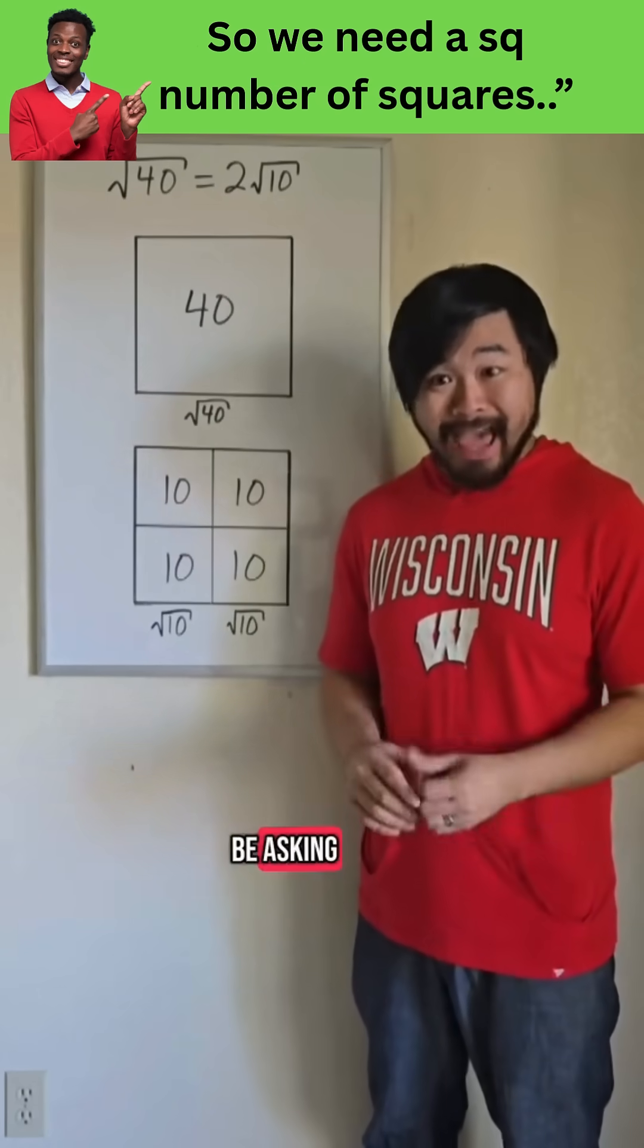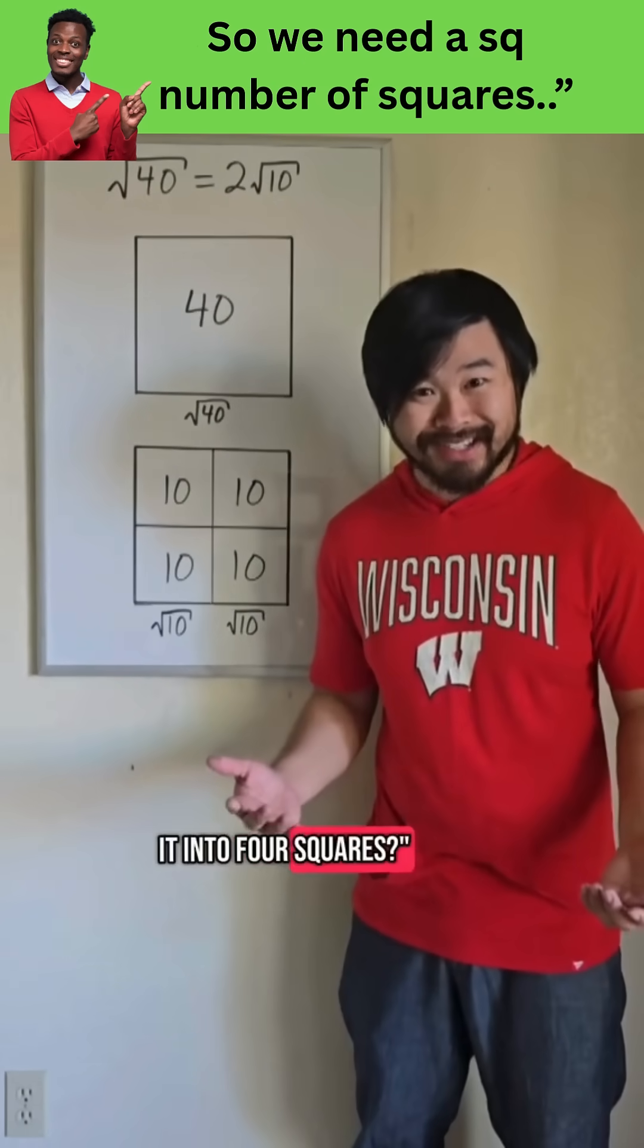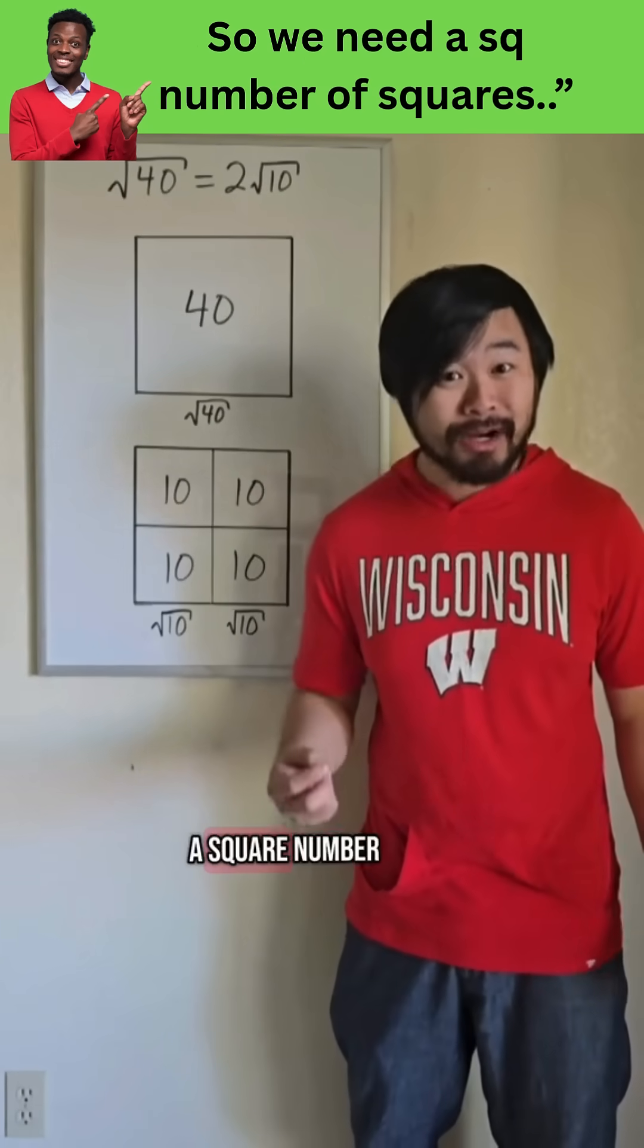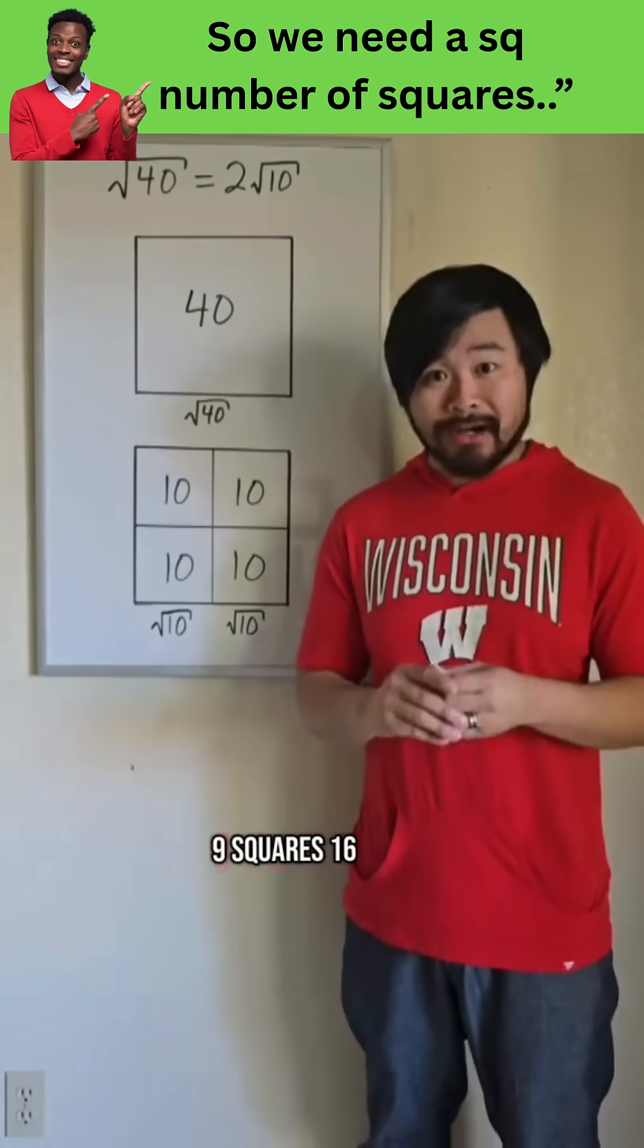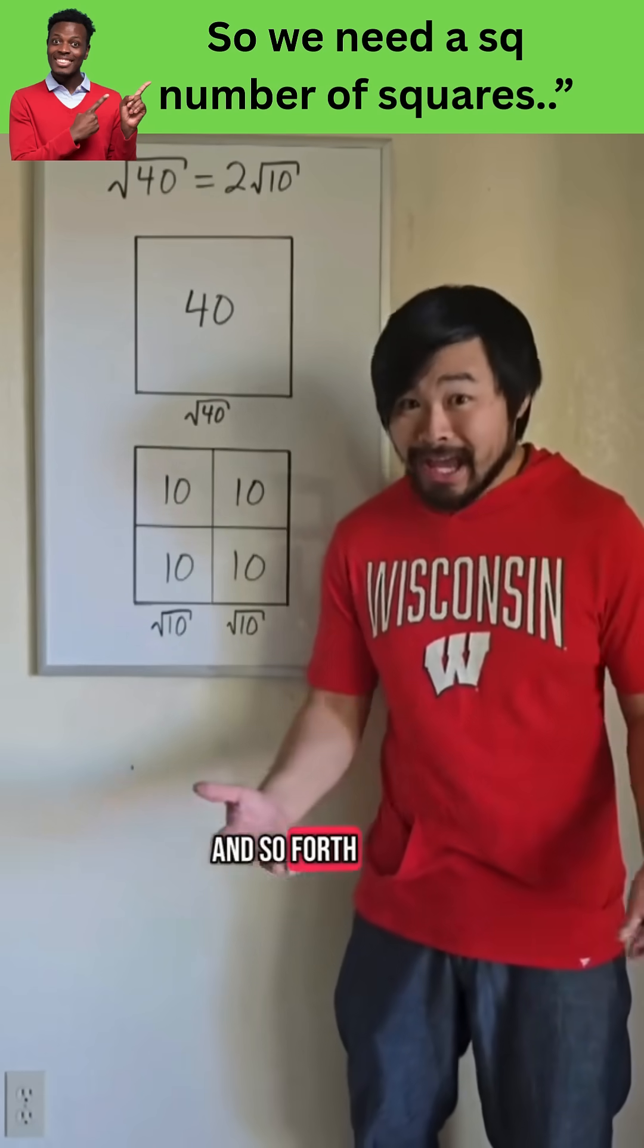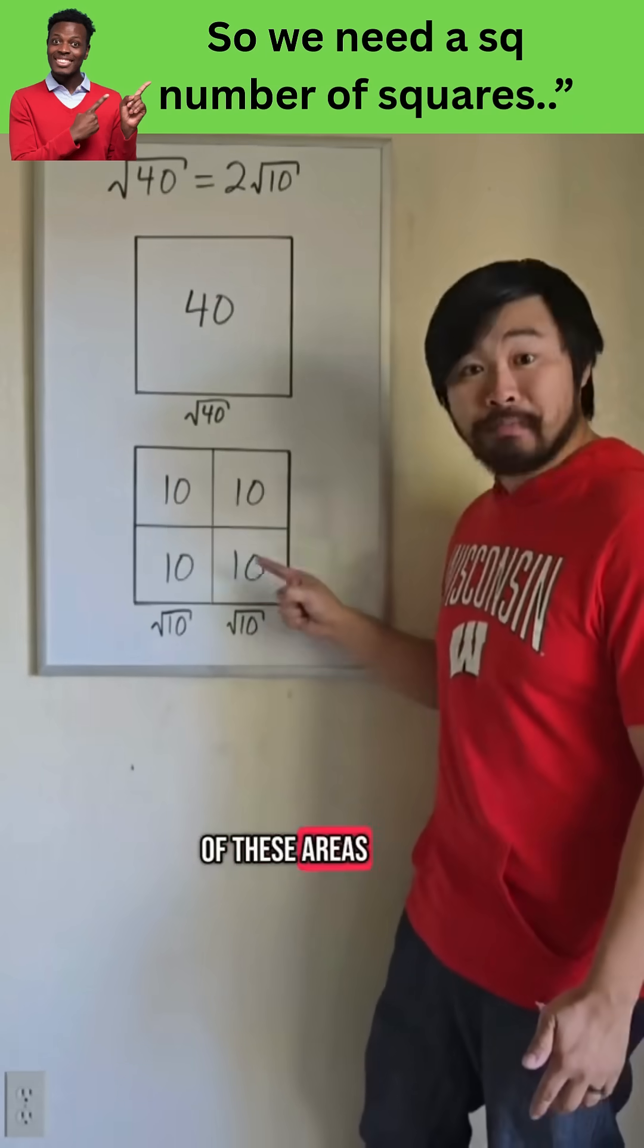Now someone might be asking, how did you know to break it into 4 squares? Well, we need a square number of squares. So can we break 40 into 4 squares, 9 squares, 16 squares, and so forth, and have each of these areas be a whole number?